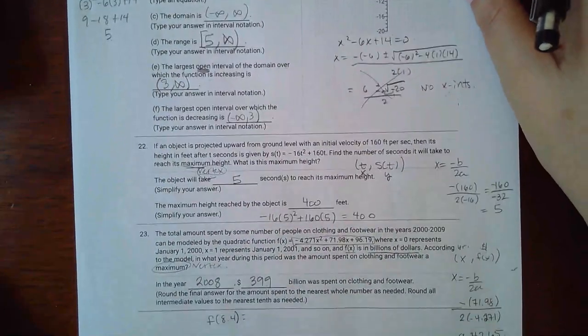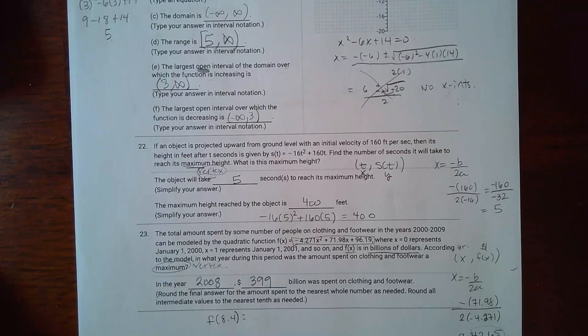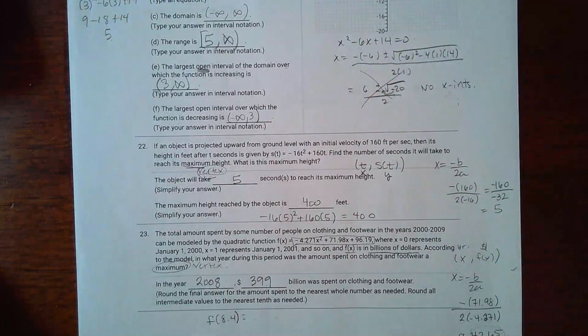Number 22 says if an object is projected upward from ground level with an initial velocity of 160 feet per second, then its height in feet after t seconds is given by this function there. Find the number of seconds it will take to reach its maximum height. What is the maximum height?